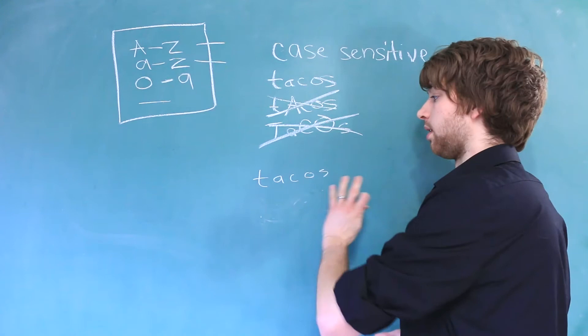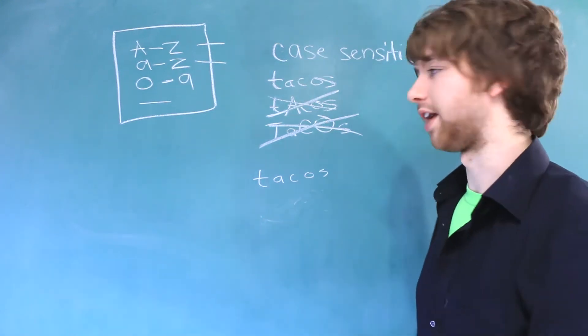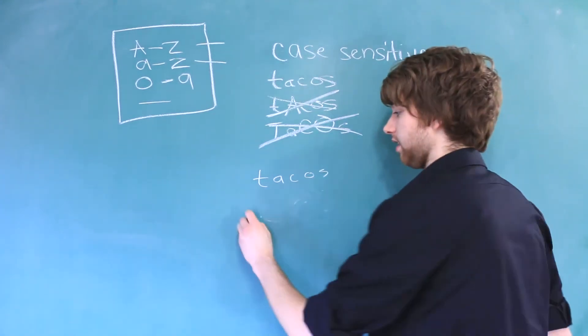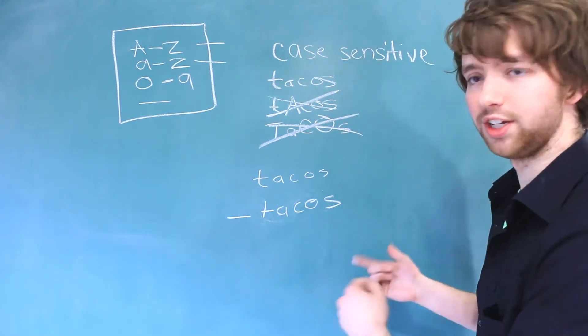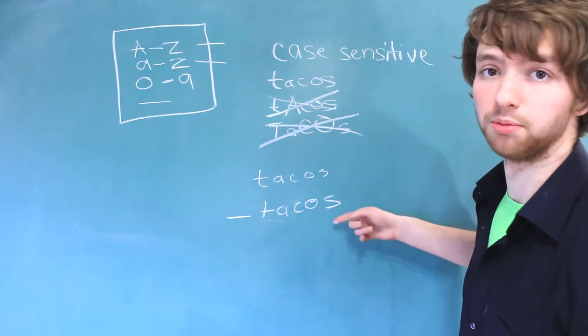If you do need to use the name twice, you might want to consider adding an underscore before it like this. Now there is kind of a more clear distinction between these two variables.